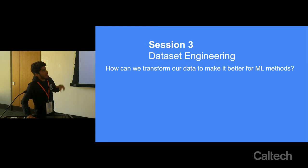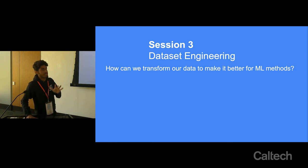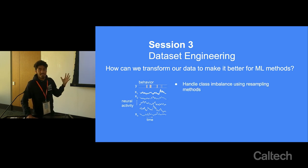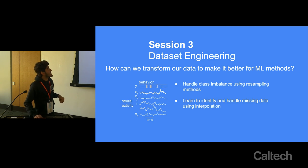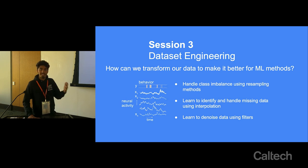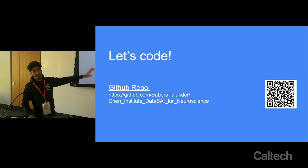In the final session we'll ask how to transform data to make it better suited for ML methods like regression. For example, the behavior you want to predict might be very sparse — a class imbalance — and we'll learn to handle that using resampling methods. We'll also address missing data chunks using interpolation techniques, and implement our own filters to denoise data with Gaussian noise. With that, let's start coding — the link to the GitHub repo is here, or find it on the course website or Slack.